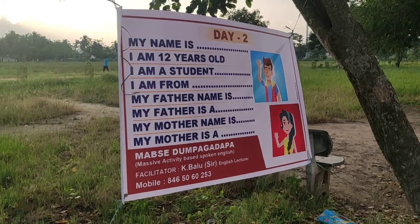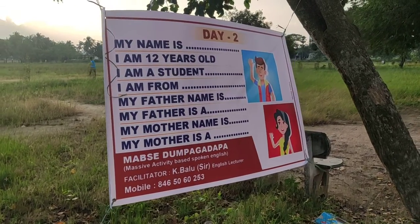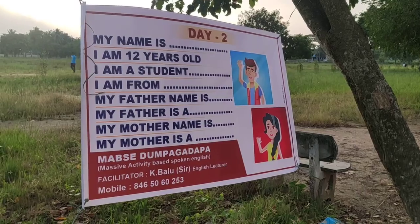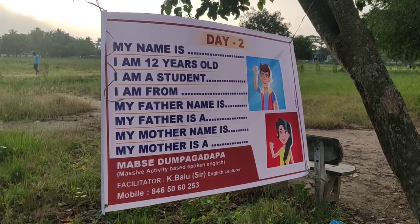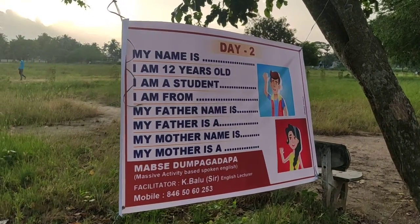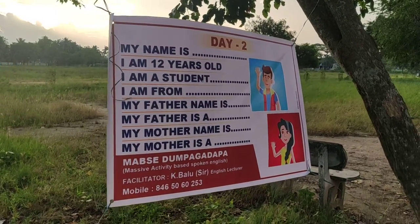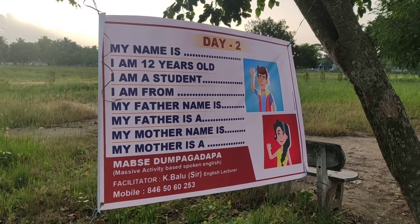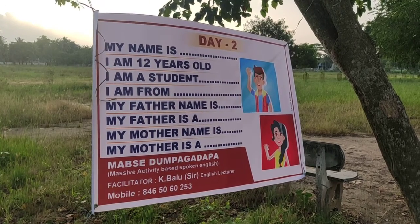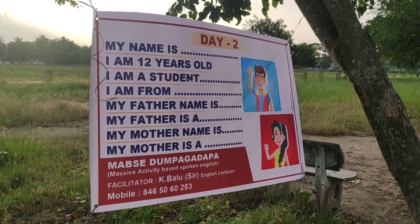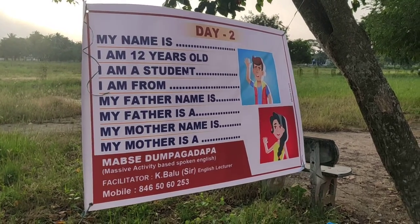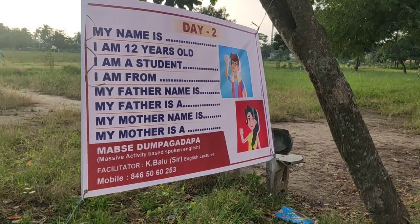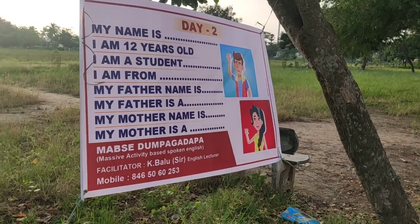My name is Tejaswini. I am 12 years old. I am a student. I am from Dumpagadpa. My father's name is Trinvaskaru. My father is a farmer. My mother's name is Janaki Jyoti. My mother is here.